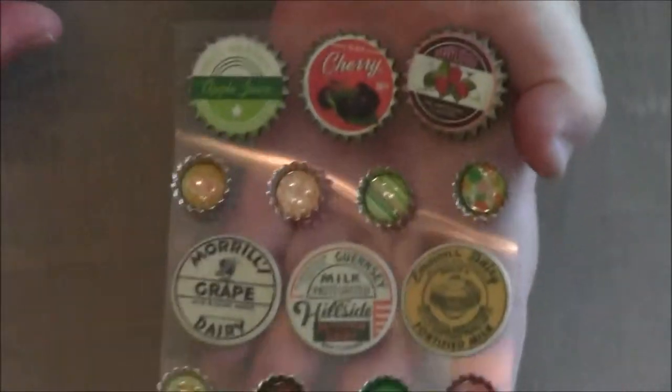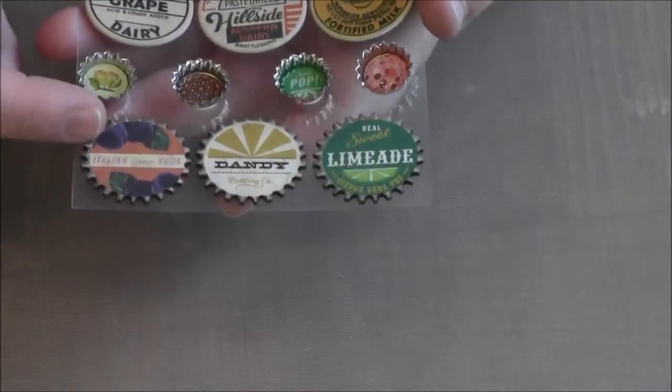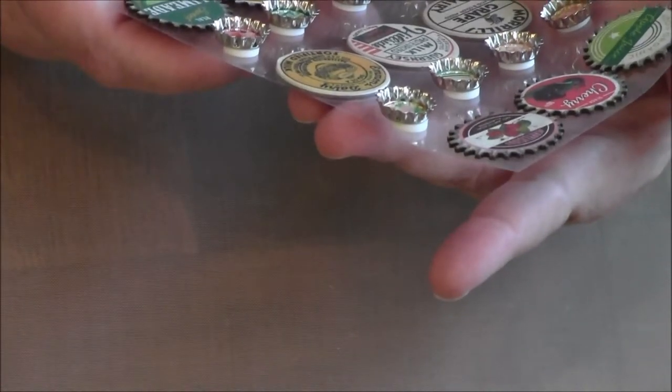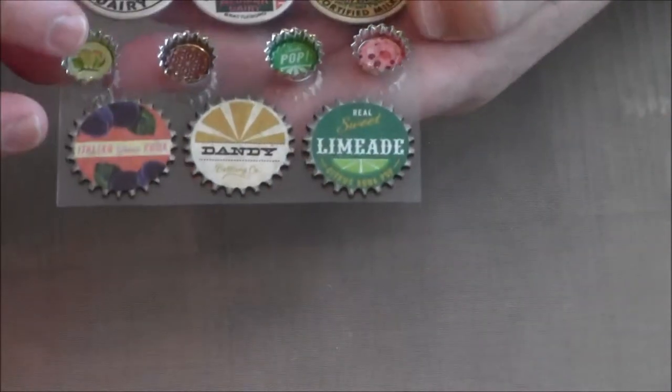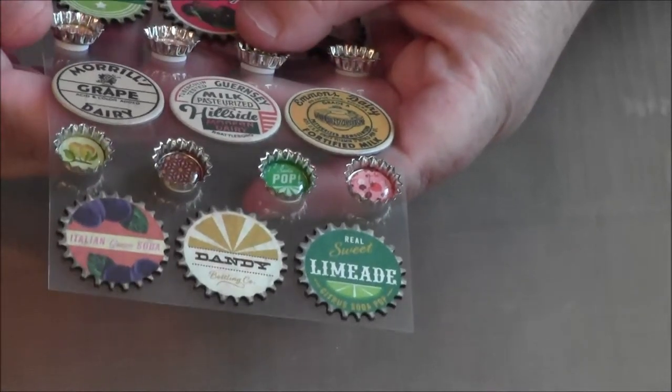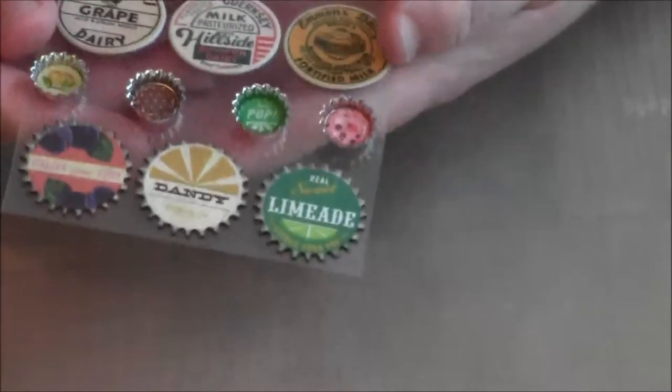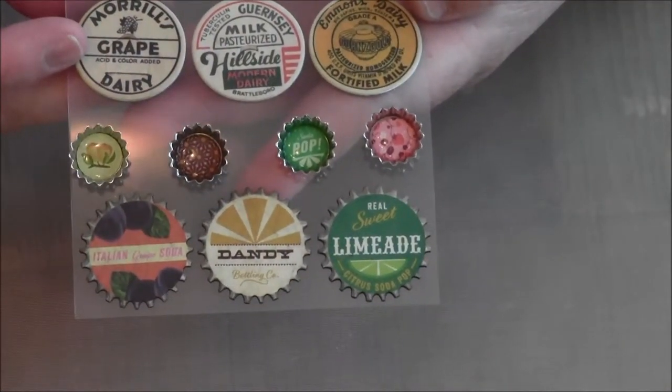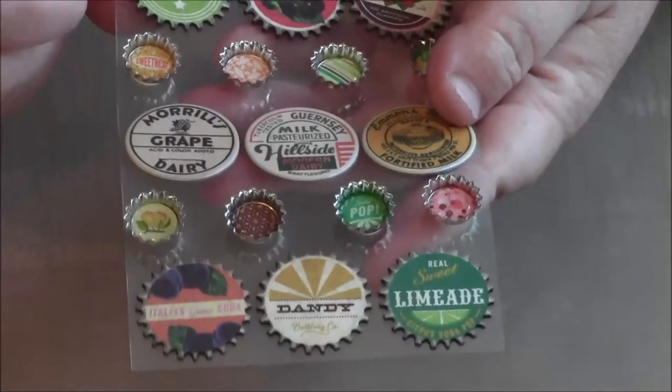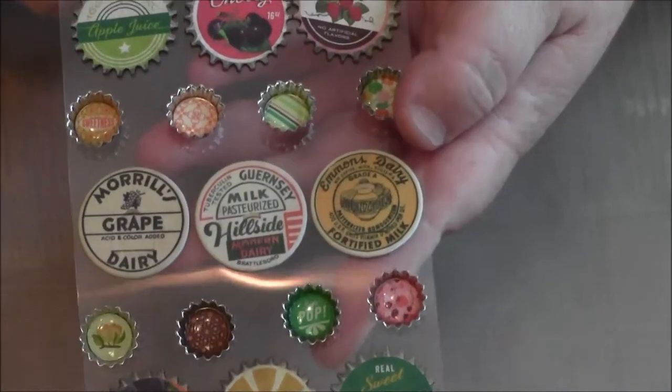Let me show you real quick. I love these little stickers and these little bottle caps. Are they not too stinking cute? We have Italian grape soda, Dandy's bottling company, and real sweet limeade citrus soda pop. Then we have some pears in here, a little star design. This one says pop. Some strawberries, flowers, stripes. These kind of all match the papers. This one says sweetness, kind of reminds you of corn. This one says Moral grape dairy, Guernsey milk pasteurized, dairy. Then we have another one, it's like 100% organic apple juice, cherry, and then Berrylicious. Let's get started on the actual project.